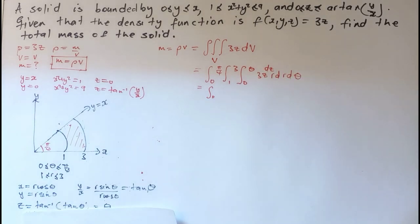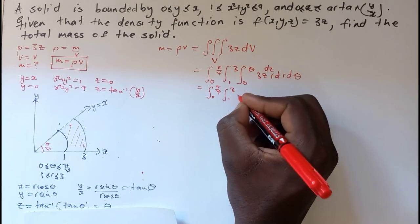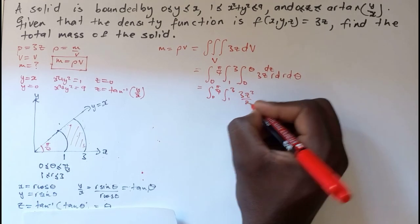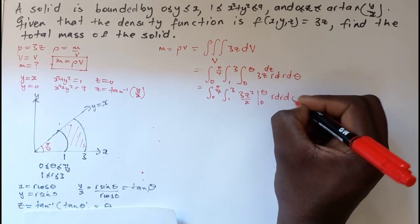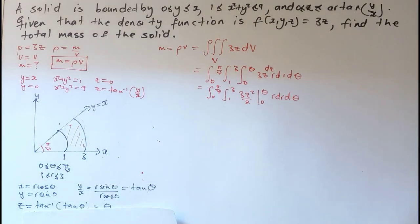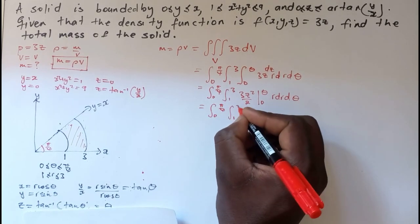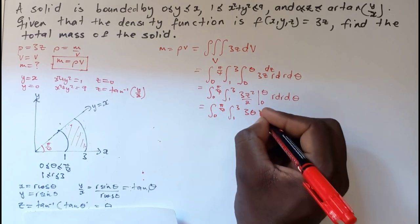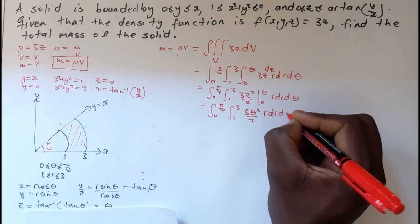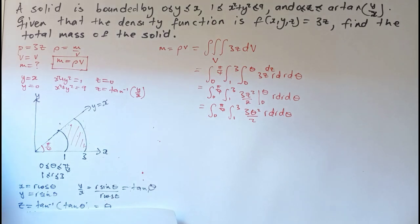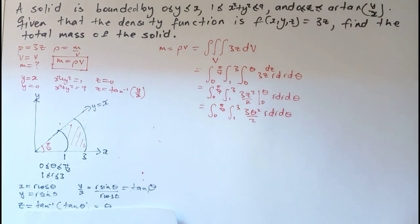First, we integrate with respect to z. We get [3z²/2] evaluated from 0 to θ. Applying the upper limit minus the lower limit gives 3θ²/2 (putting in zero gives zero). So we're left with the integral from 0 to π/4, from 1 to 3 of (3θ²/2) · r dr dθ. Don't forget the r factor — that's a common mistake.